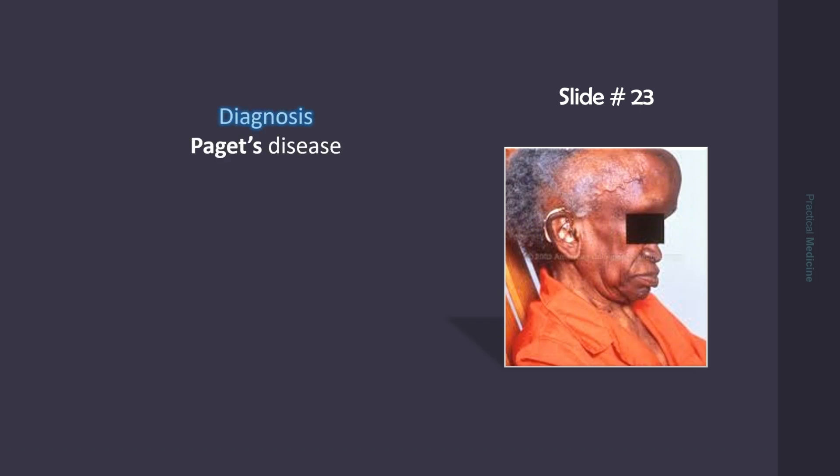This is the typical head appearance of Paget's disease of bone, characterized by large cranium and forehead.